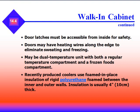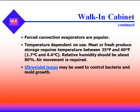The box may be a dual temperature unit with both a regular temperature component and a frozen foods compartment. Recently produced coolers use foam-in-place insulation of rigid polyurethane foam between the inner and outer walls, usually 4 inches thick. They have forced convection evaporators — fan-blown evaporators are very popular. Temperature is dependent on use; meat or fresh produce storage requires temperatures between 35 and 40°F, with relative humidity of about 80%. Constant air movement is required.